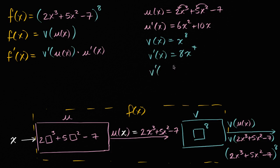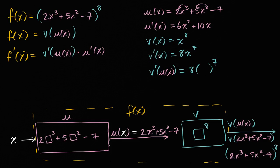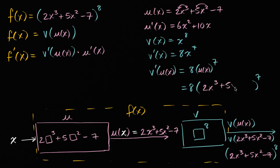And so v prime of u of x — if you input u of x into v prime — it's going to be equal to eight times u of x to the seventh power. Whatever you input into v prime, you take it to the seventh power and multiply by eight. So that is equal to eight times the entire expression: two x to the third plus five x squared minus seven, all to the seventh power.